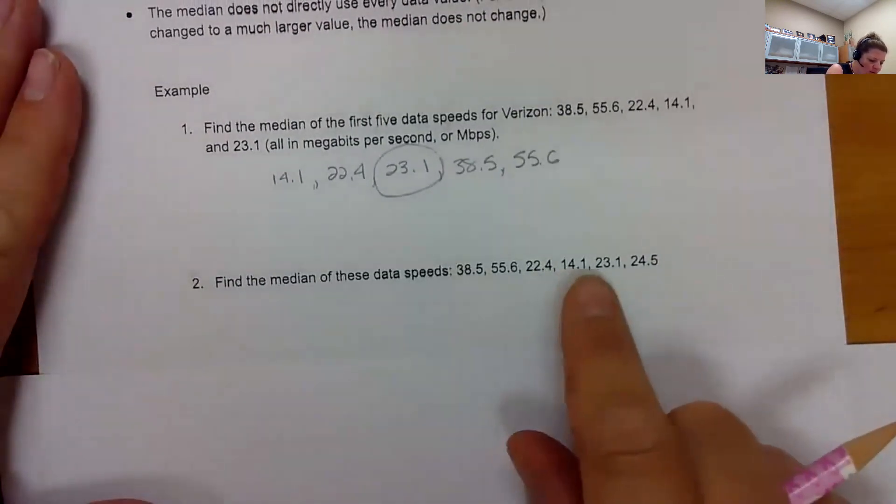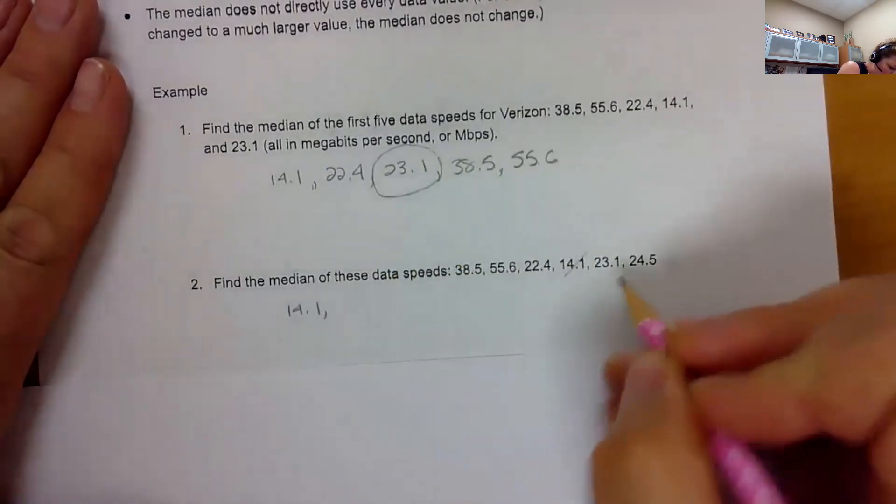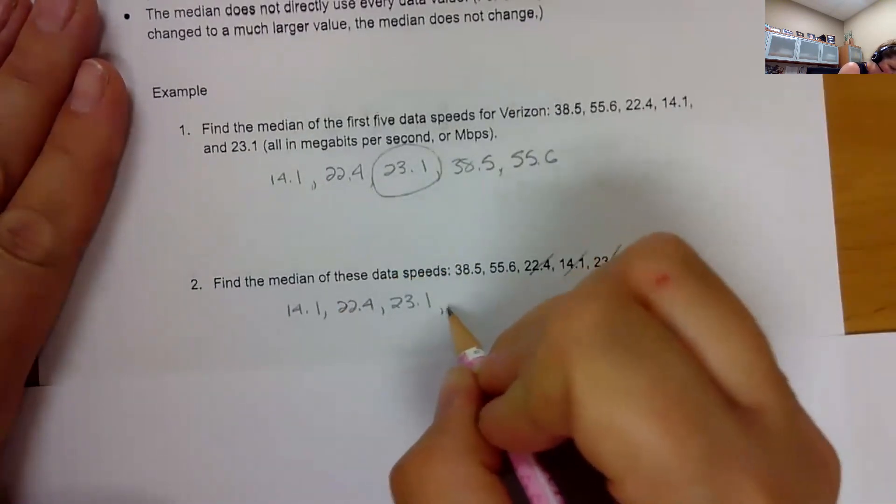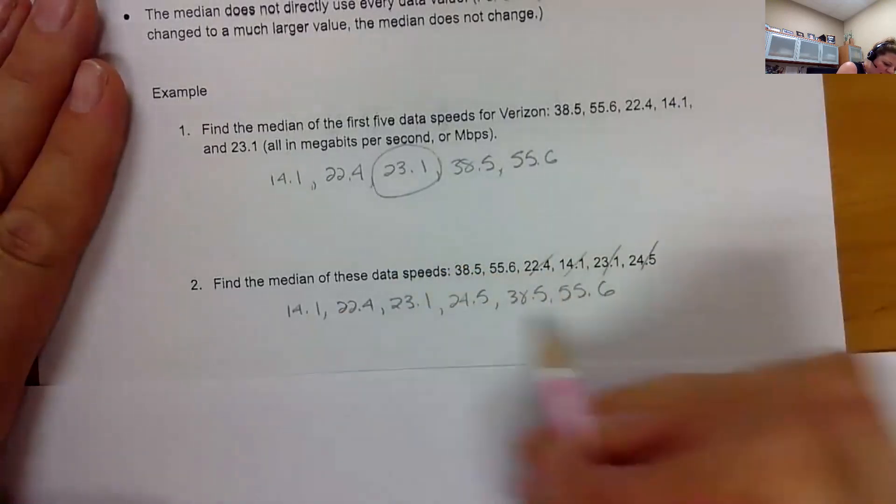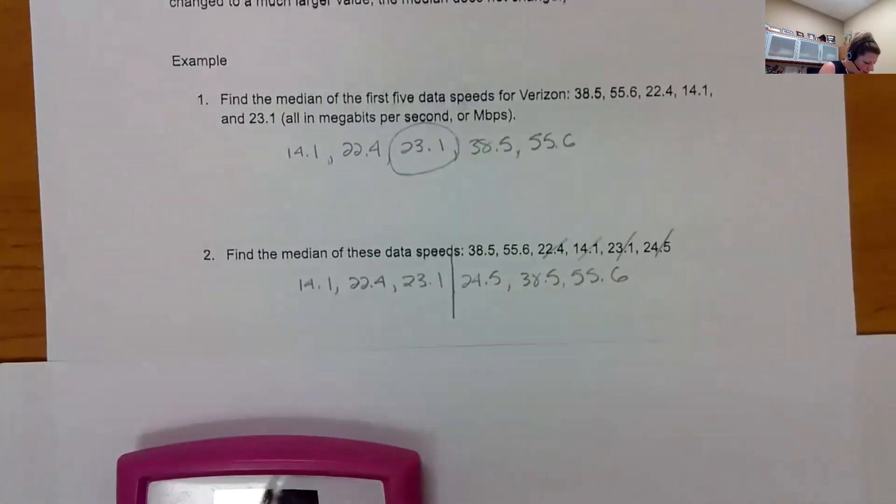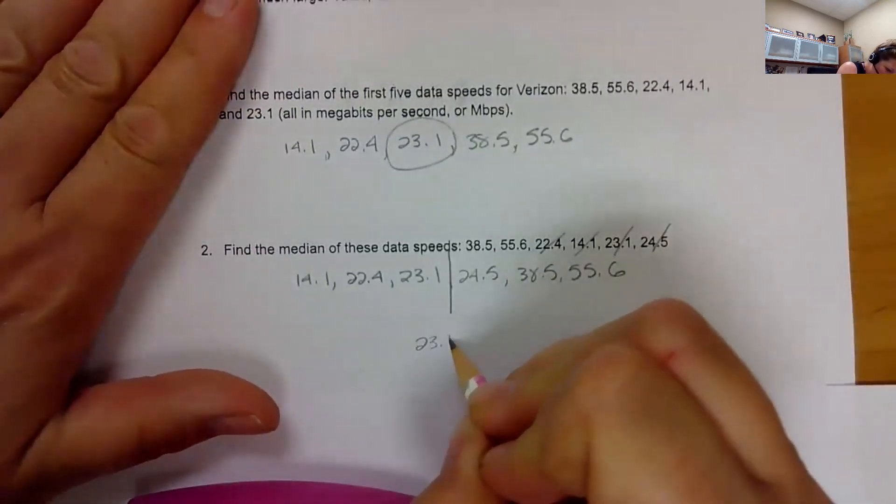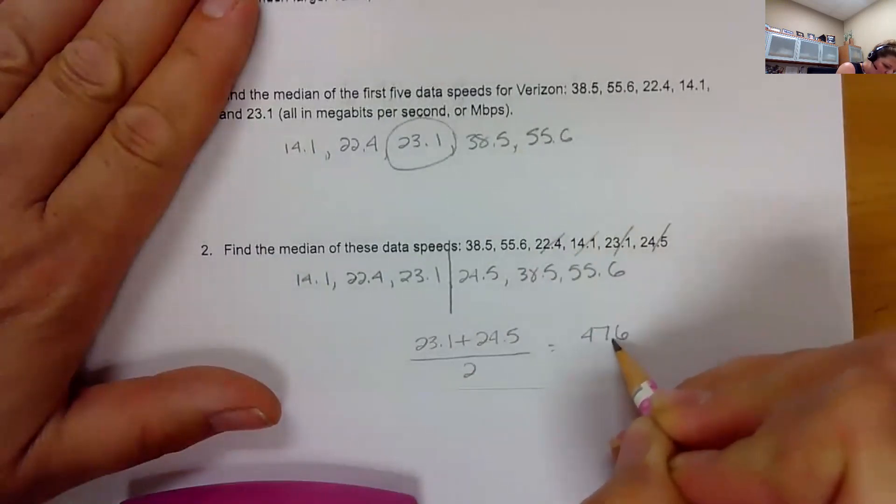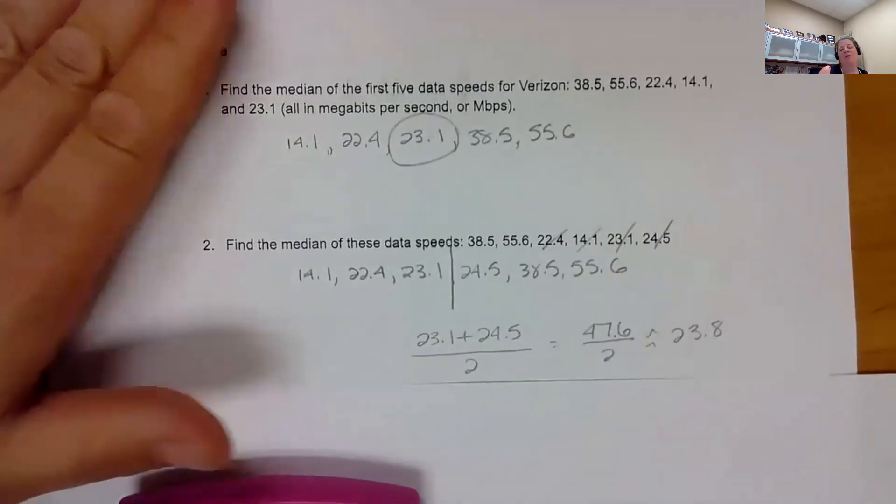So what if I now have six data? Again, let's put these in order: 14.1, 22.4, 23.1, 24.5, 38.5, 55.6. So on this one, I see three and three. This splits my data in half, and I need the average of these two numbers. So 23.1 plus 24.5 is 47.6 divided by two, which is about 23.8. So there's our median if you have odd versus even.